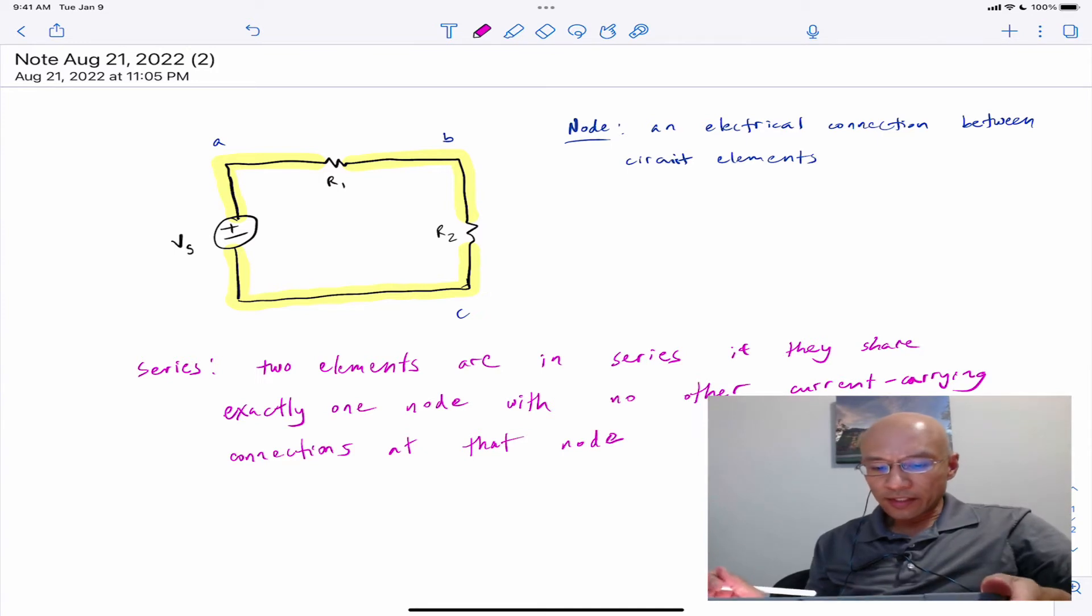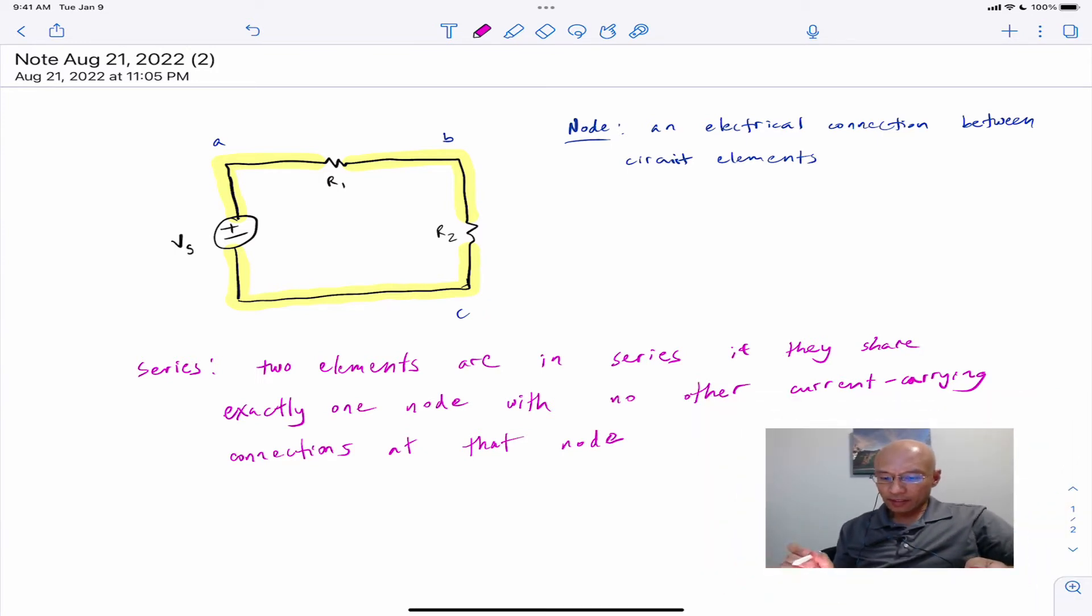So we can identify series elements as two elements that share exactly one node. They have exactly one node in common, and that node must have no other current carrying connections. So we can say that R1 and R2 are in series. Why? Because they're connected at node B, and then at node B, there's no other current carrying connections there.